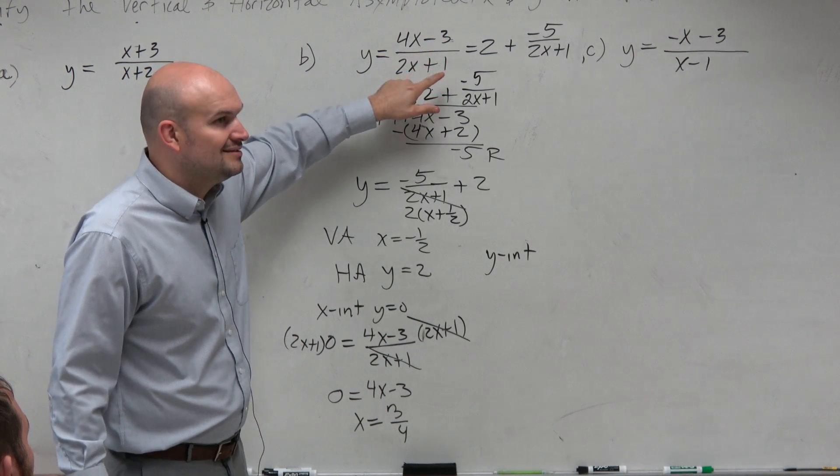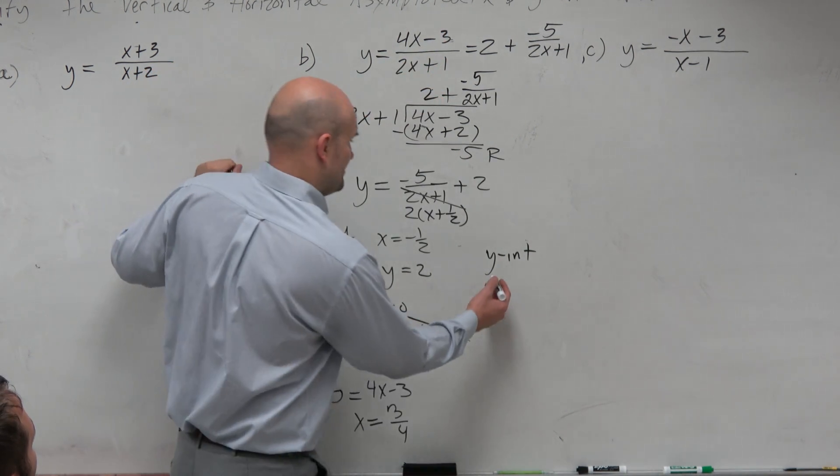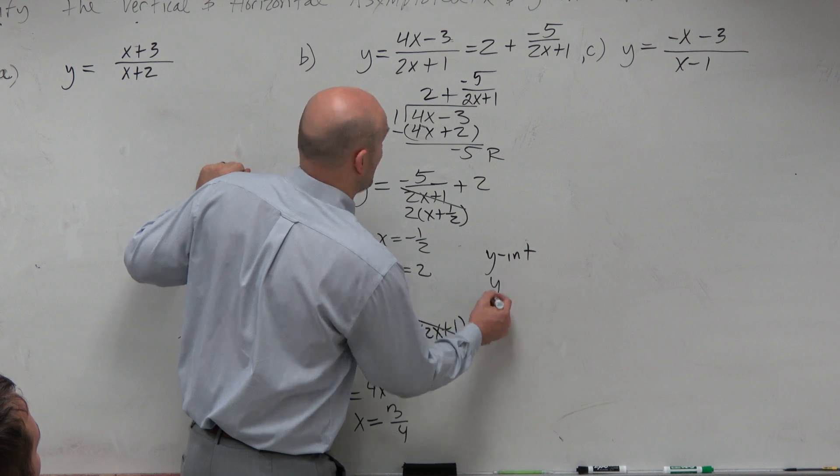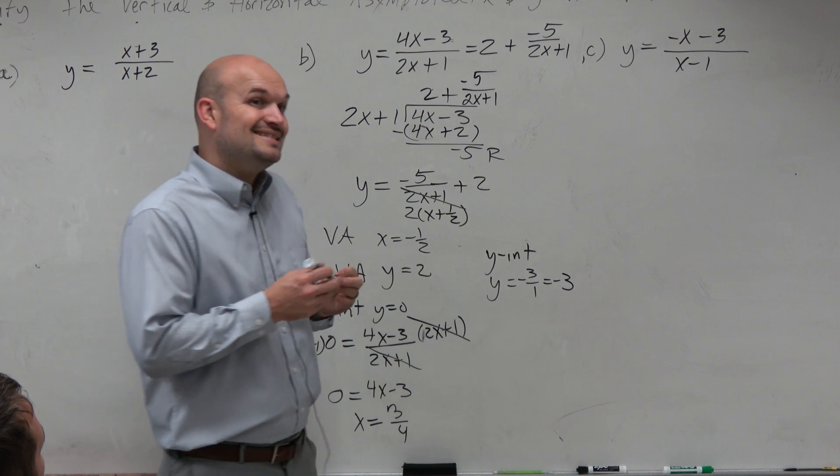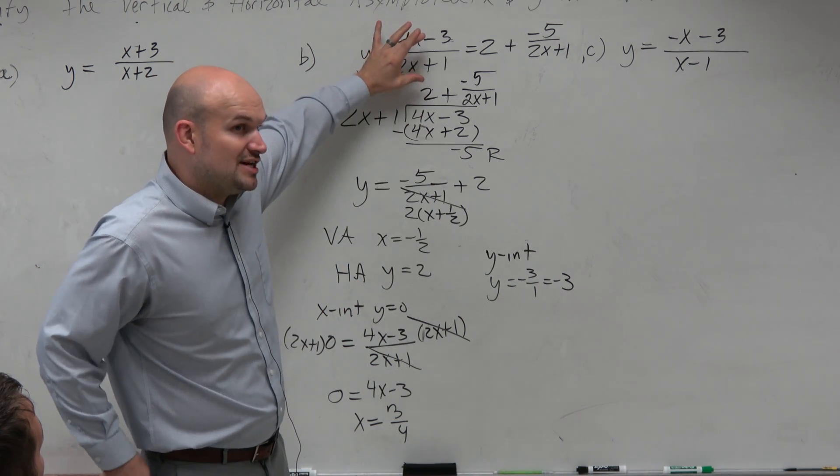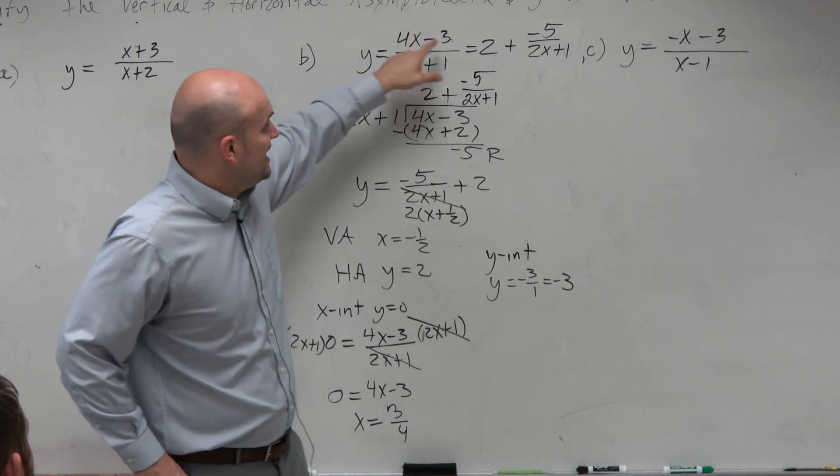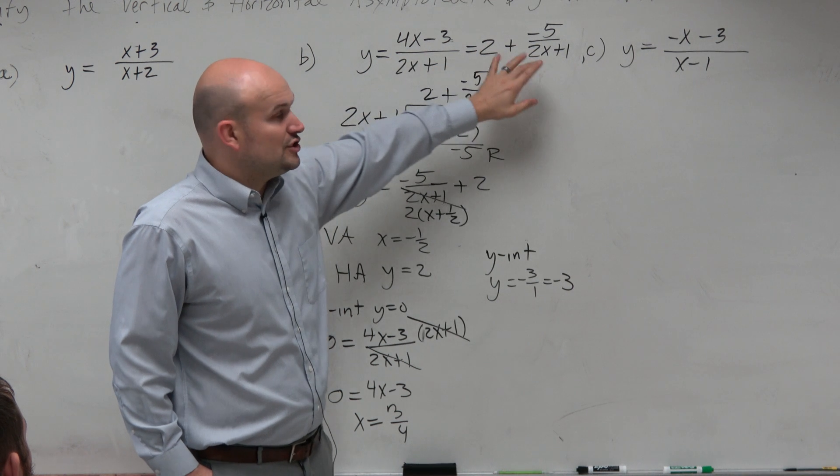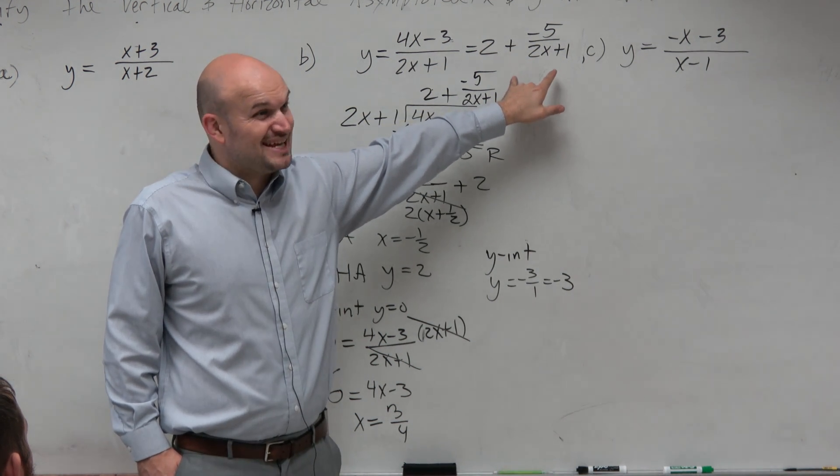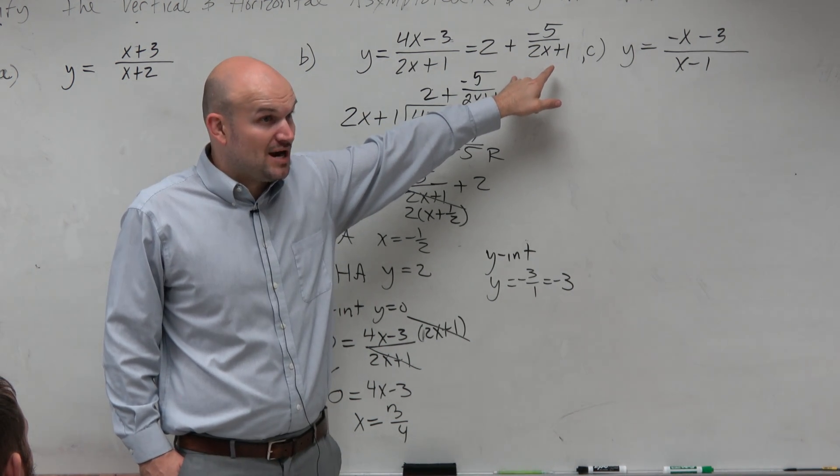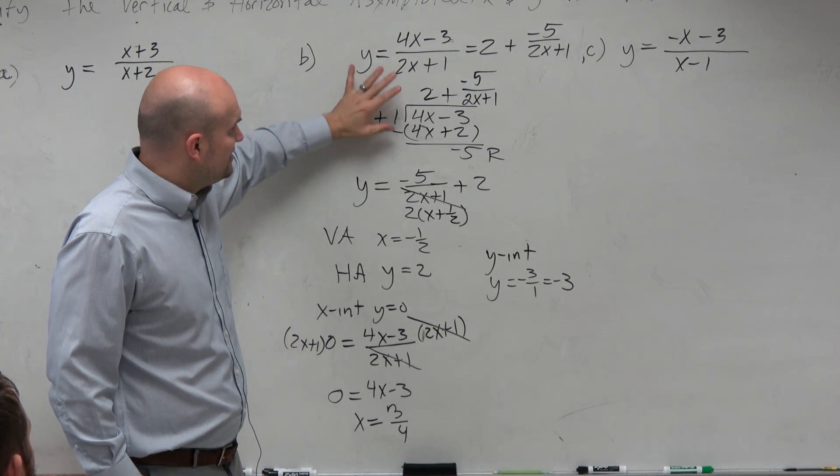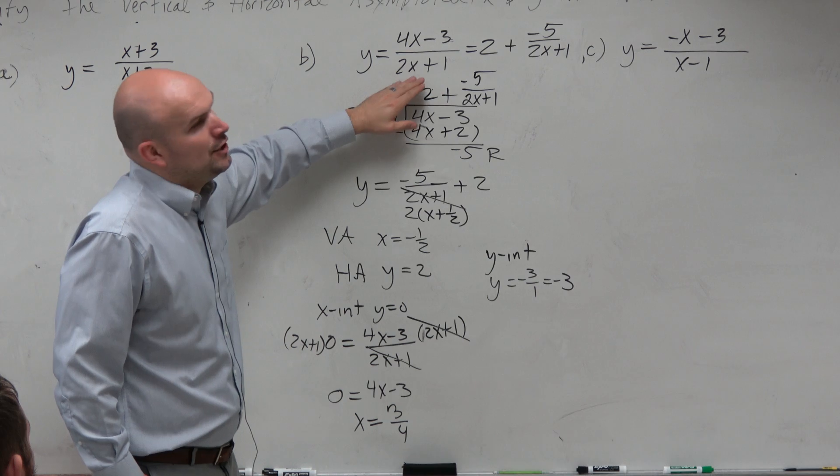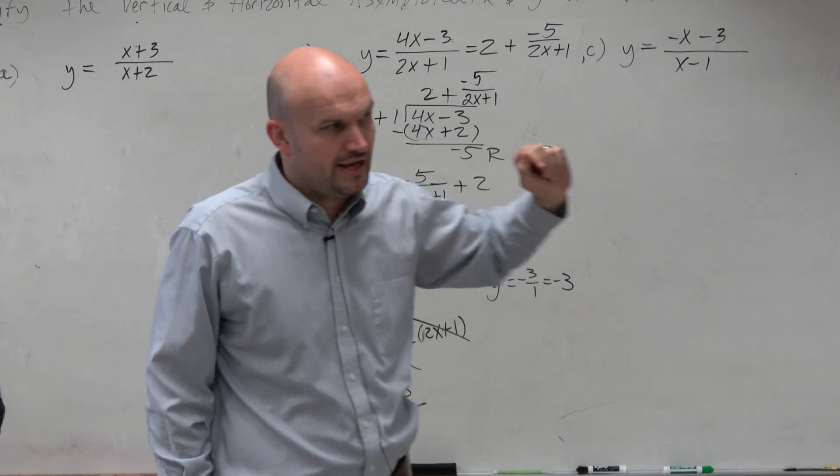Constant over the constant. So this one is just y equals negative 3 over 1 equals negative 3. So it's nice. When you have an equation like this, it's nice to be able to divide it so you can quickly and easily understand the asymptotes, where those asymptotes are. And then, to find the x and the y-intercepts, I would prefer using the original equation. Oh, OK.